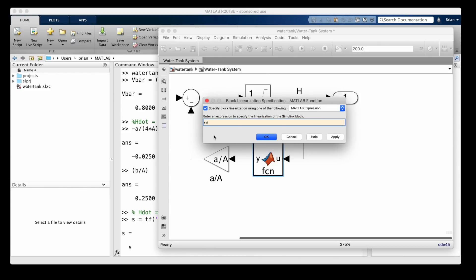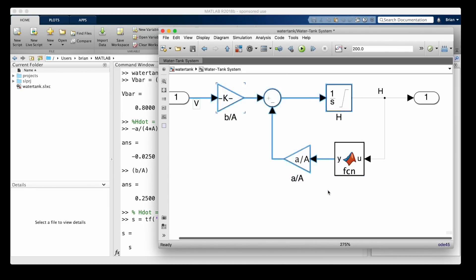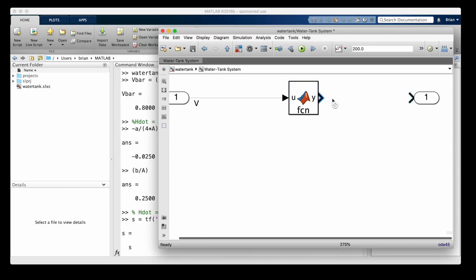For example, I could force my square root function to linearize to some arbitrary state-space model of my choosing. Now when I linearize the block, Simulink won't try to estimate the Jacobian numerically.